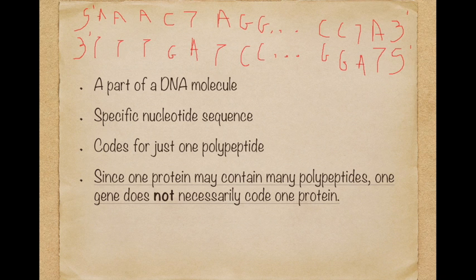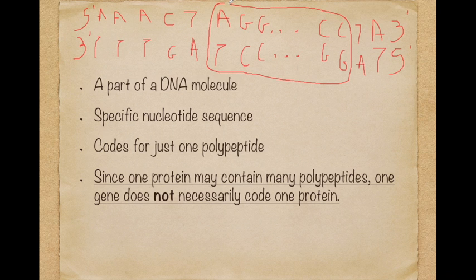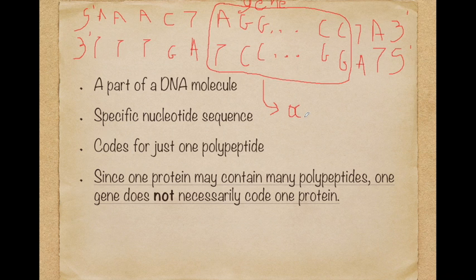If I tell you that this sequence here codes the polypeptide chain alpha in the hemoglobin molecule, then this is the gene — the gene that codes the polypeptide chain alpha. Does it code the whole protein? No, because one gene codes one polypeptide chain, and there are proteins like hemoglobin which contain more than one polypeptide.